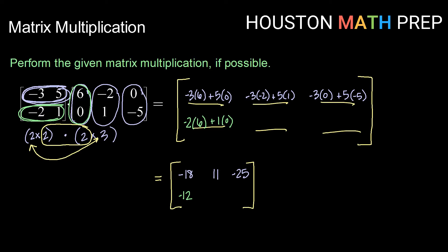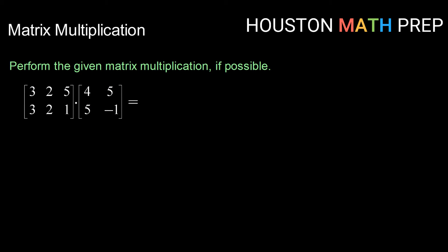Continuing, I have row 2 times column 2. That gives me -2 times -2 plus 1 times 1, or 4 plus 1 is 5. And finally, we have row 2 times column 3. So we have -2 times 0 plus 1 times -5, or 0 plus -5. Alright, let's check out this next example.